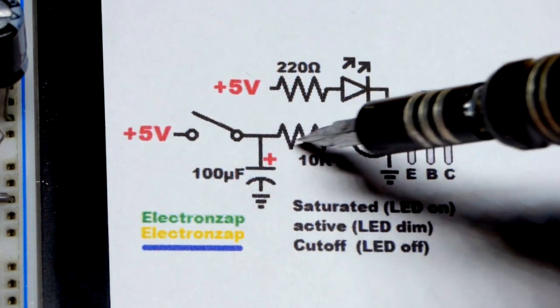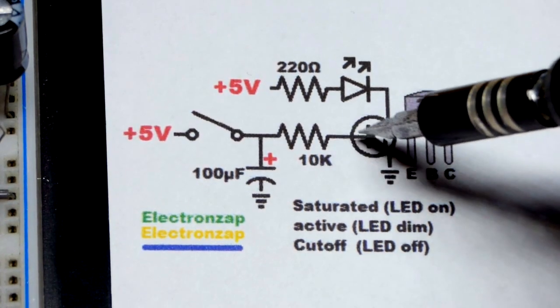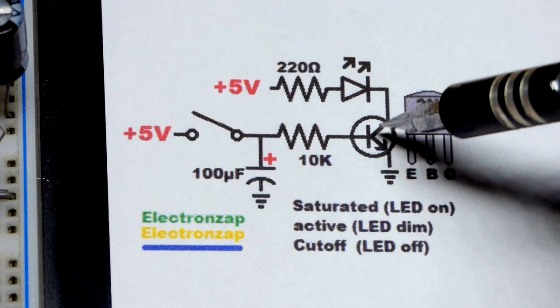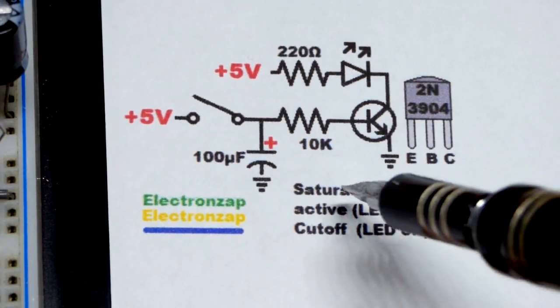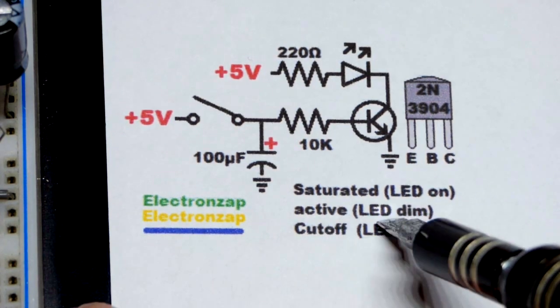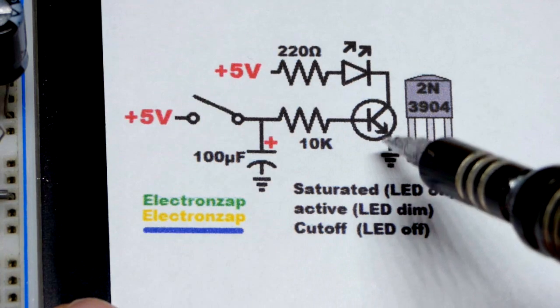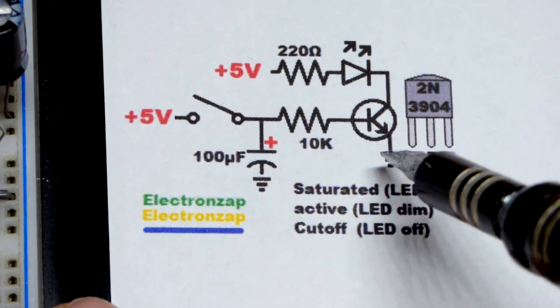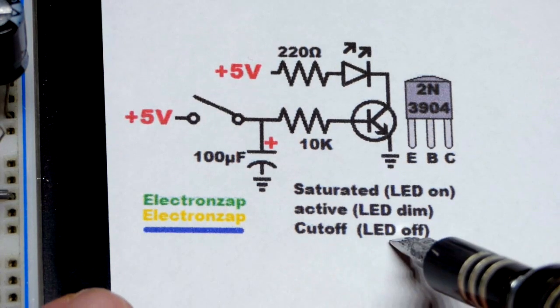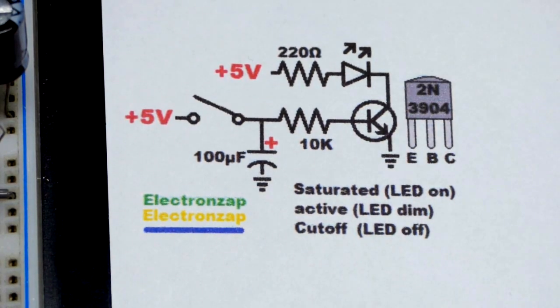As the capacitor discharges, its voltage and current go down. Eventually there's not enough current for the collector to emitter to be fully on. Fully on is called saturated. Partially on is called active region, and current goes down. Finally, the capacitor runs out of enough energy to move current, and that's called cutoff. The transistor and LED will be fully off.